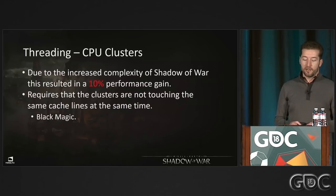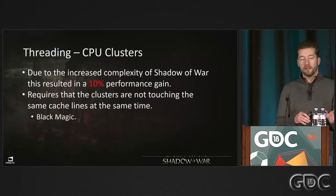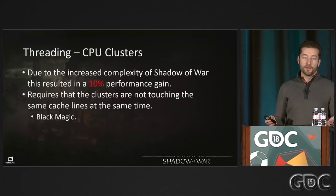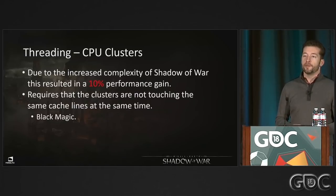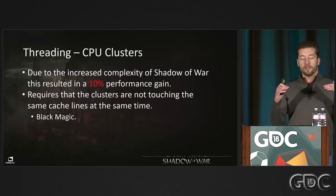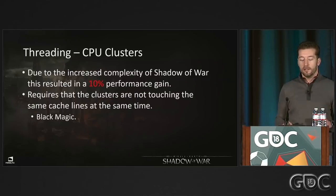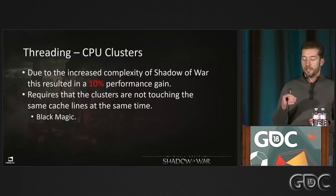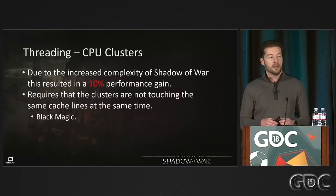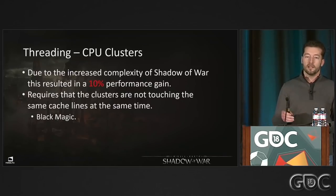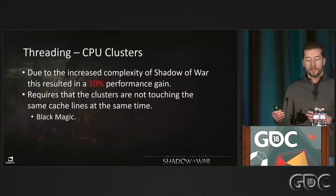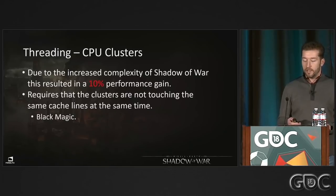Achieving this segregation is what I'm calling black magic. We tried this exact thing on Shadow of Mordor and failed every time. The problem is when data exists in both CPU cluster caches and is accessed simultaneously — this causes an extremely expensive sync between clusters. If you attempt it for the first time, you'll likely see a massive performance loss. It took us a while of looking at our data and figuring out what in the cache was stalling us, until suddenly we had a 10% gain.